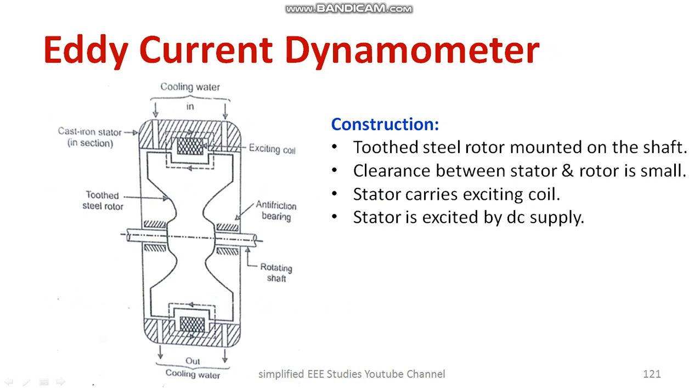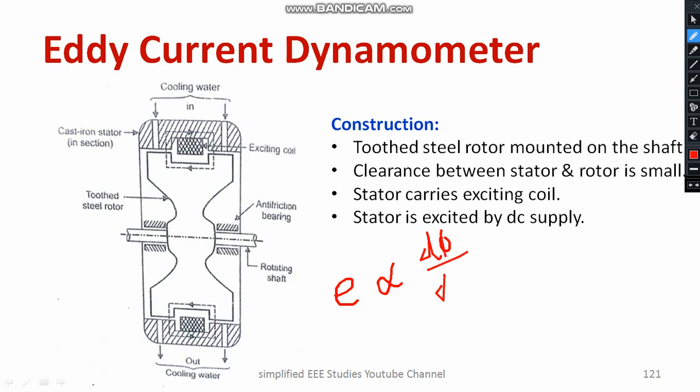Let us understand about the eddy current dynamometer. How does eddy current produce? According to Faraday's laws of electromagnetic induction, the induced EMF is directly proportional to the rate of change of flux linkage. After the formulation of induced EMF, if the circuit is closed, there is a movement of circulating current. That circulating current is known as eddy current. Eddy current leads to a heating effect, and the conductor gets heated up. That is the basic idea about eddy current.